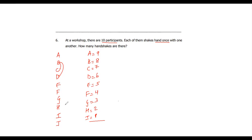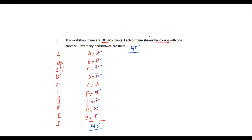Just add them up. For a quick addition we look for numbers that add up to 10: 9 plus 1 is 10, 8 plus 2 is 10, 7 plus 3 is 10, 6 plus 4 is 10 — that's 40 — and then add 5, giving 45. So there were 45 handshakes that day.